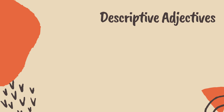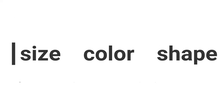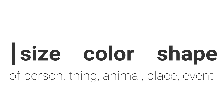Descriptive adjectives tell the quality of a noun or pronoun. These are used to express the size, color, or shape of a person, a thing, an animal, a place, or an event.